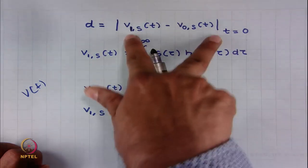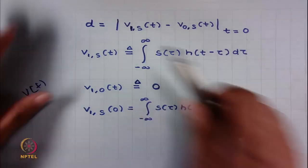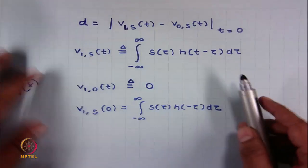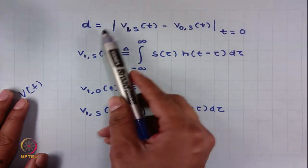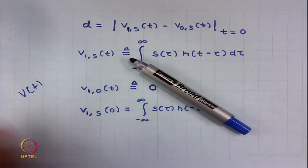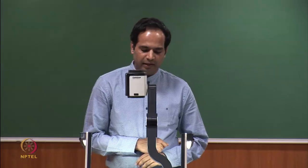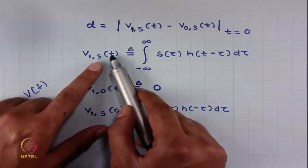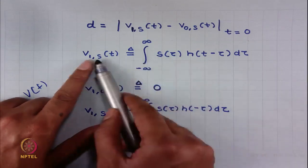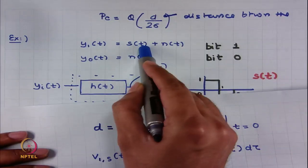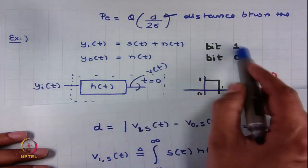This is the distance d, and we must evaluate it at t = 0 because the sampler operates at t = 0. At the output of the sampler, d corresponds to the distance between the signals when bit 1 is transmitted versus when bit 0 is transmitted. So we need to find v₁ₛ(0), the signal content at the output when bit 1 is transmitted.